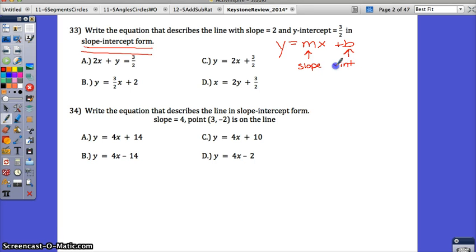After you plug in, your final answer should stay in that form. So plug in what we know. The slope is 2, so replace M with 2. Keep the X—the X is your variable and your Y is your variable for your ordered pair. The Y-intercept is 3/2, so just put that in for B. Your equation then is Y equals 2X plus 3/2. The correct answer is C.